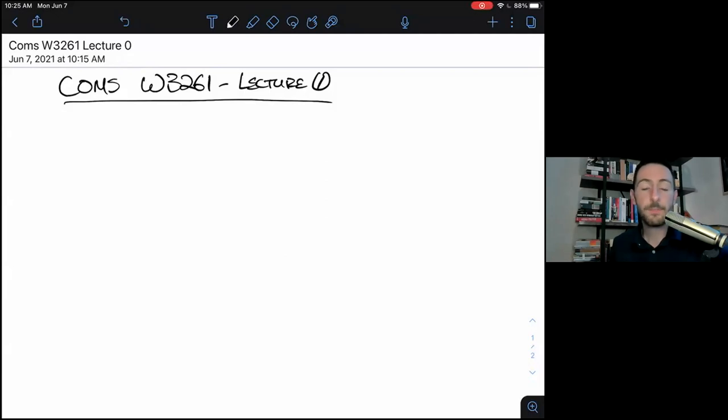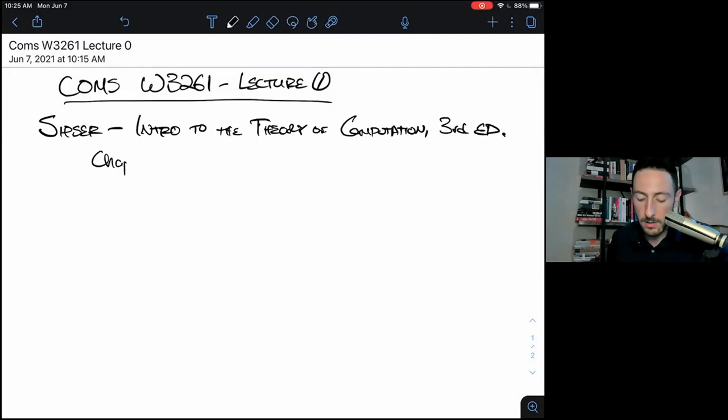So today we're going to be going over some of the discrete math fundamentals that are assumed prerequisites for this course. We're going to be going pretty fast. I will provide definitions for most things, but the idea is that you should recognize these things and feel more or less comfortable with them. All the material we're going to cover today is in the textbook chapter zero. So that's Sipser, intro to the theory of computation, third edition, mainly section zero point two.